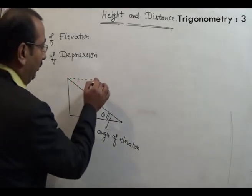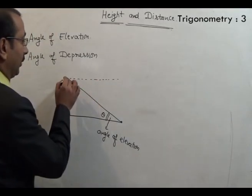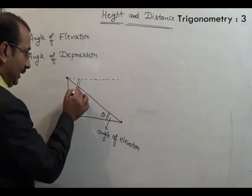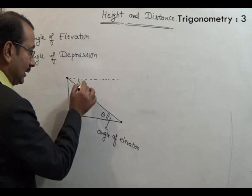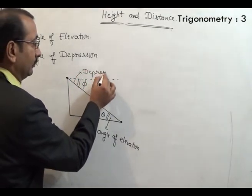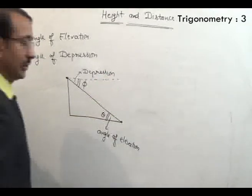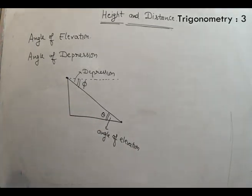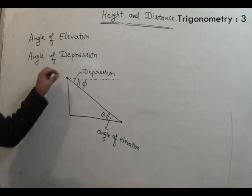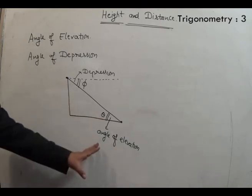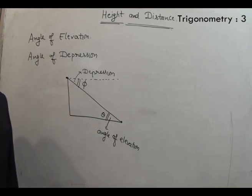On the other hand, when a man stands at a higher point and looks down at a lower point, the angle made with the base is known as angle of depression. So when angle of elevation is given, you are standing at the base and looking at the top. When angle of depression is given, you are standing at the top and looking at the base.